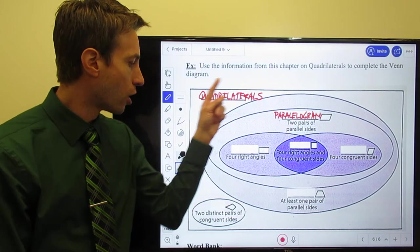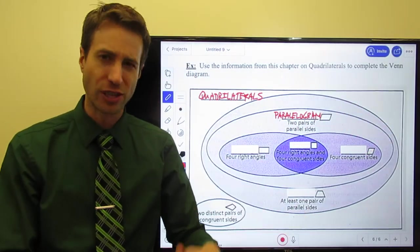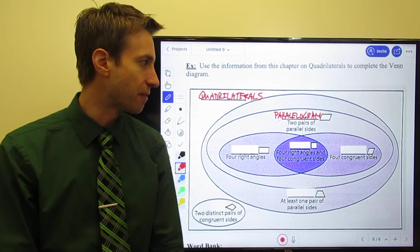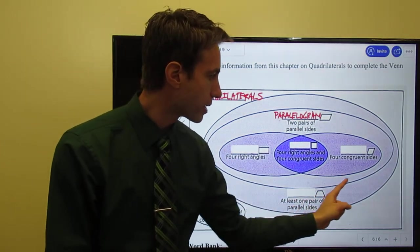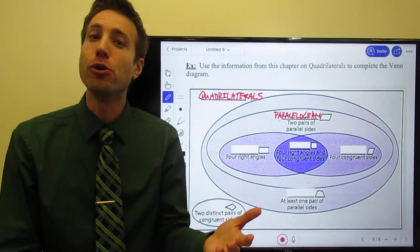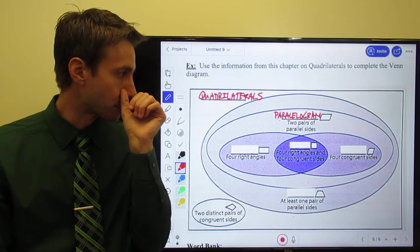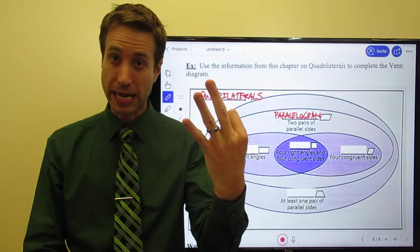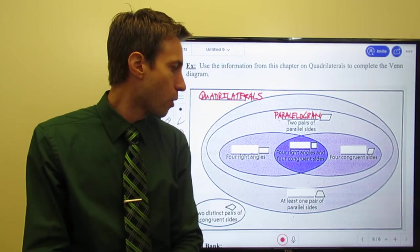So what we see here is there are lots of quadrilaterals. In our universe of quadrilaterals, there are many four-sided figures. But right here inside this oval, we have a few special kinds of quadrilaterals we call parallelograms. We talked about three of them, three special kinds of parallelograms. And what are they?